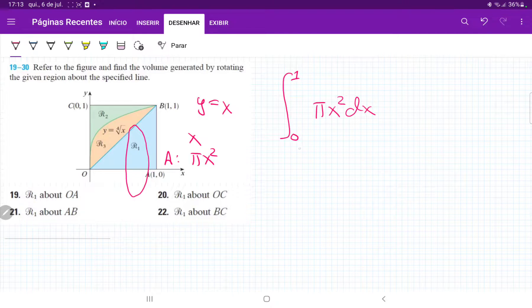And then this is just simple integration. That's going to be x cubed divided by 3 times pi evaluated from 0 to 1, which is pi over 3 times 1 cubed minus 0 cubed, which is just pi over 3 cubic units.